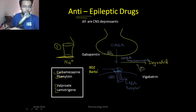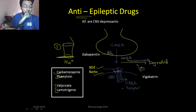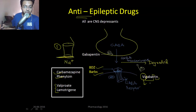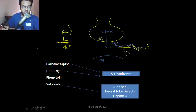Another way to depress the CNS is by activating GABA receptors, since GABA is an inhibitory neurotransmitter. Benzodiazepines and barbiturates bind with GABA receptors and inhibit the neuron. You can also increase the release of GABA with gabapentin, or decrease the degradation of GABA with vigabatrin, which is a GABA transaminase inhibitor.